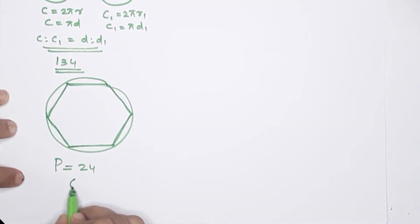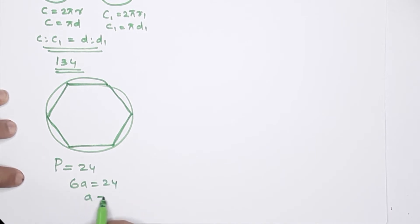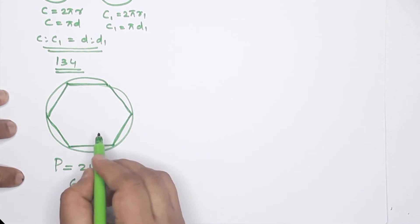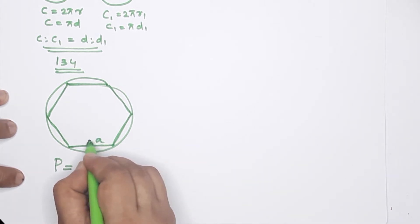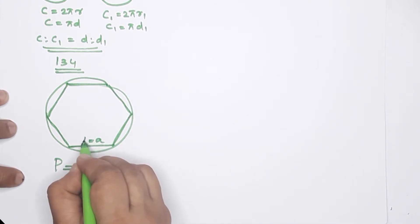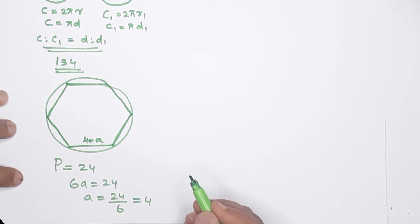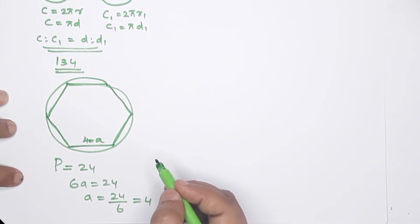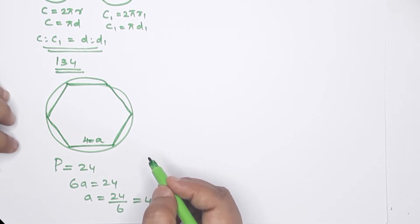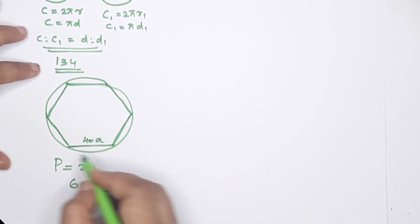There are 6 sides. So 6A equals 24, and A equals 24 divided by 6, which equals 4. Now we are finding the perimeter of a square with vertices on this circle.